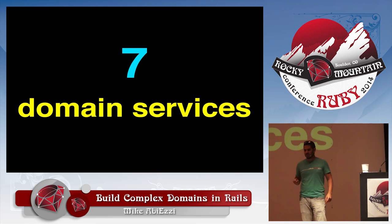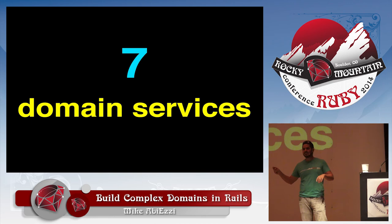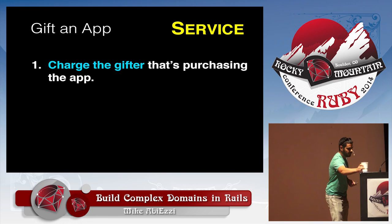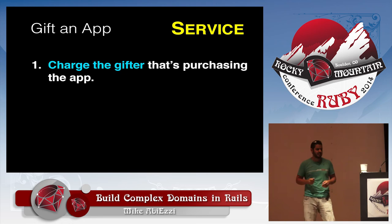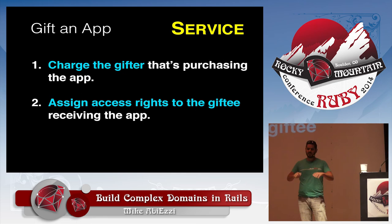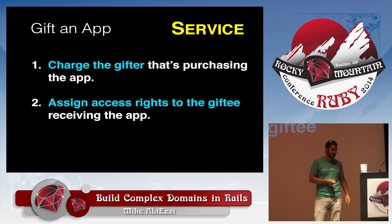Last, let's talk about domain services. We talked about aggregates — they have their own little world of complexity that they're controlling. What if you need to process a transaction between two aggregates? One aggregate isn't allowed to reach out of itself and affect anything else. So we need a third party to handle that — that's where domain services come into play. Say we want to gift an app. We need to charge the gifter purchasing the app, and then assign access rights of the app to the giftee. Our customer object is an aggregate, and even though we're affecting two customer objects, they're still independent aggregate instances, not allowed to reach over to each other. So we use the domain service to handle this transaction.